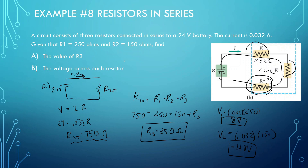Let's write it out. V3 equals current times resistance: 0.032 times 350, and we get 11.2 volts. All the voltages should add up to the battery total, which is 24.